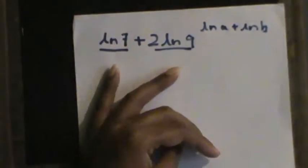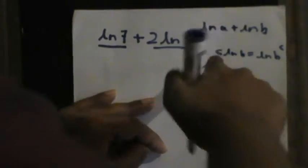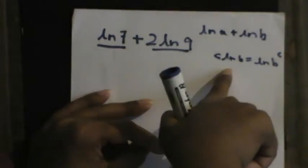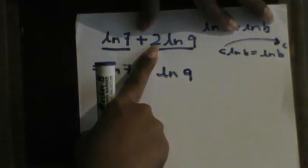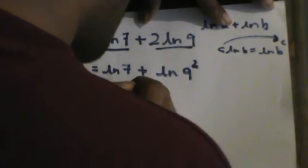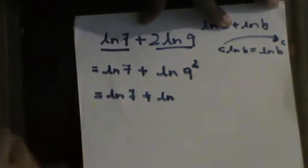We need to convert the second term into the correct format. From the concepts of logarithms, if you have c·log(b), this is equal to log(b^c). So if you have a coefficient in front of a logarithm, you can bring it up as a power of the value inside. So I can write the second part as log(9²), and since 9 squared is 81, the second term becomes log(81).